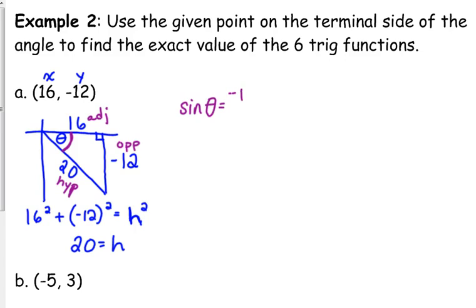So the sine here is the opposite, negative 12 over the hypotenuse, 20. Again, don't worry about reducing it, just leave it. The cosine is the adjacent, 16 over the hypotenuse, 20.